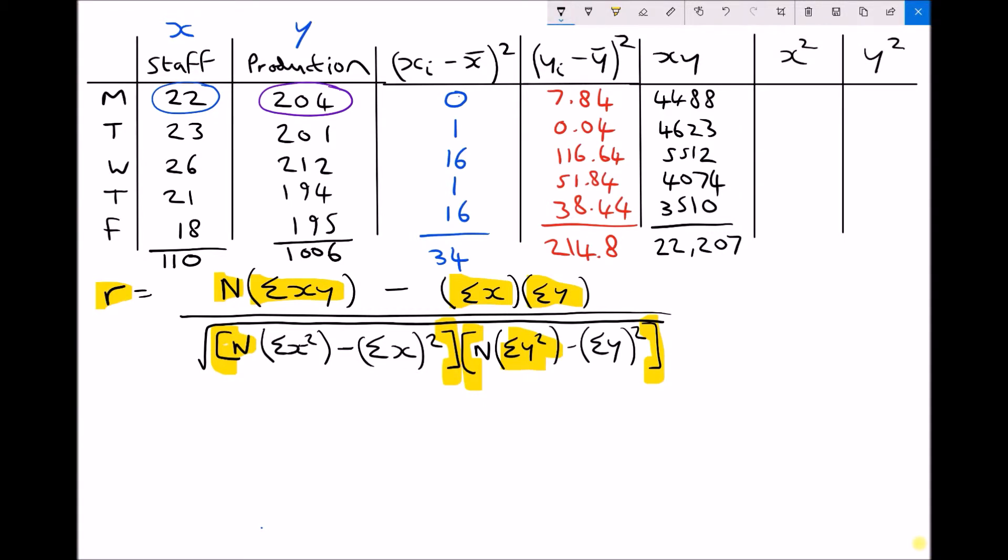So x squared, if we refer to our left hand column or the staff column, we need to do 22 squared. And 22 squared is 484. We need to do 23 squared which is 529, 26 squared which is 676, 21 squared which is 441, and 18 squared which is 324. And we need to add those together which gives 2454.